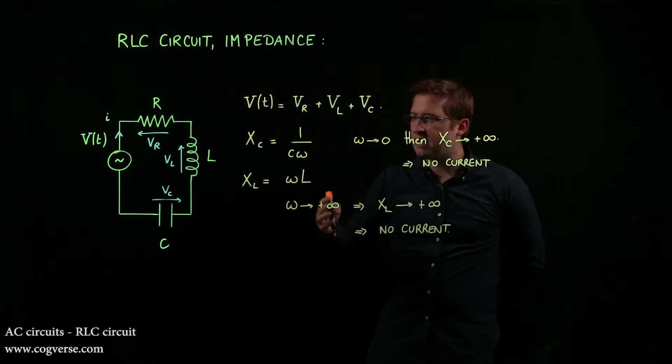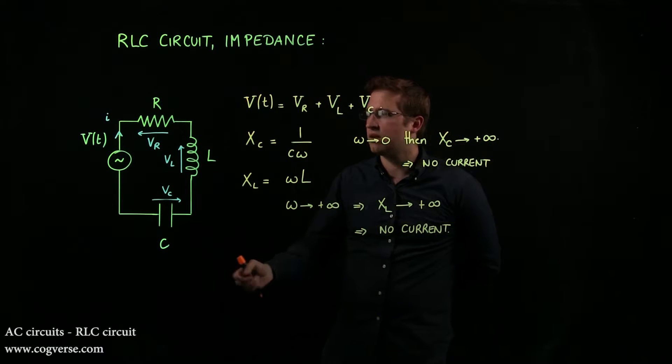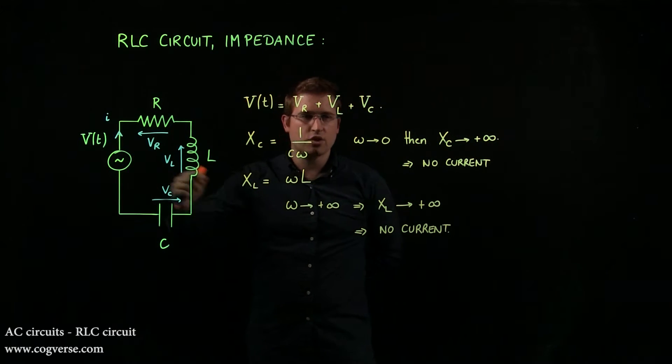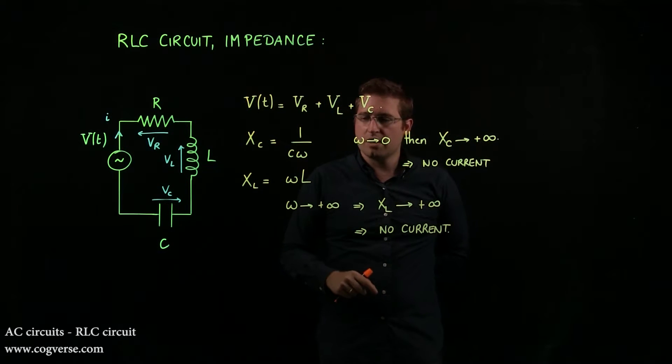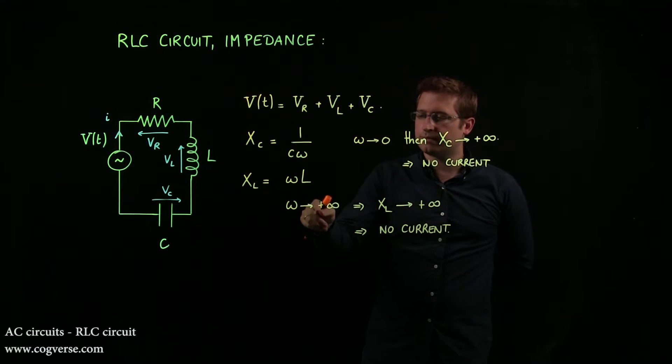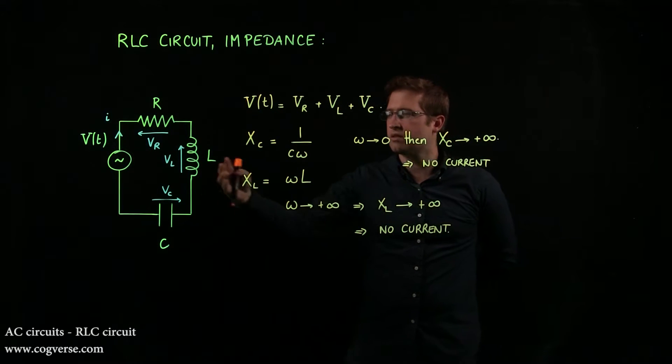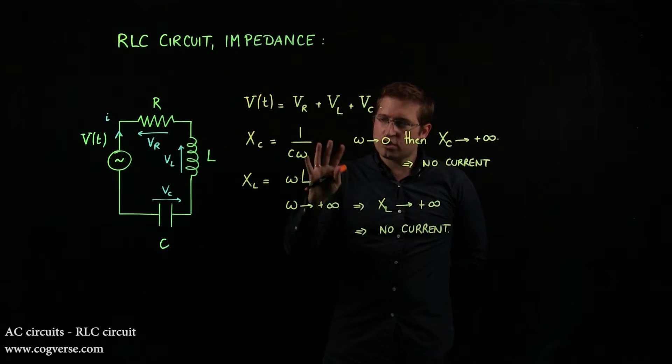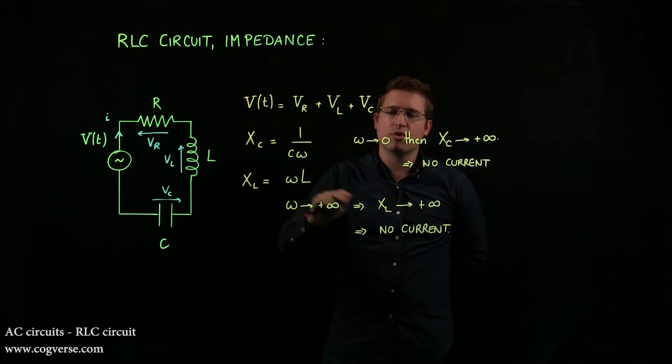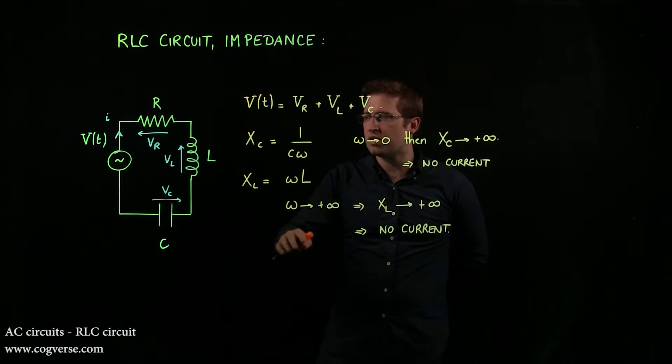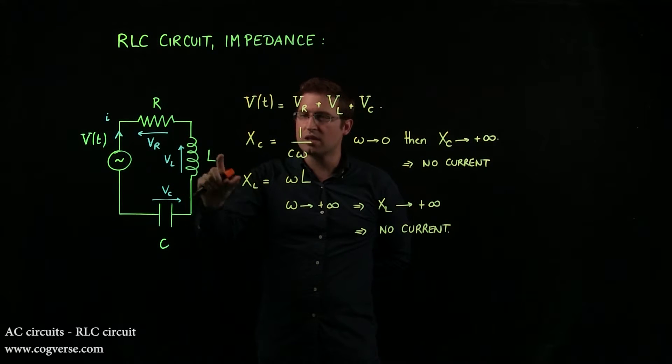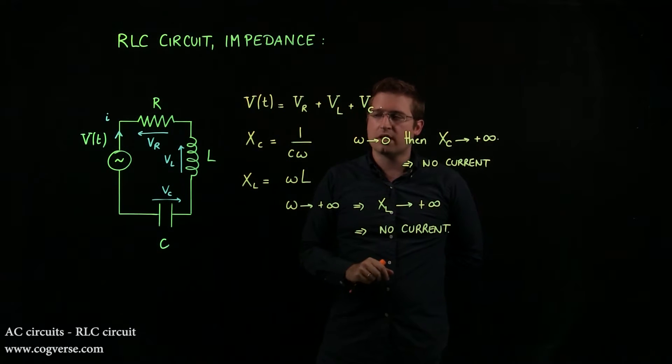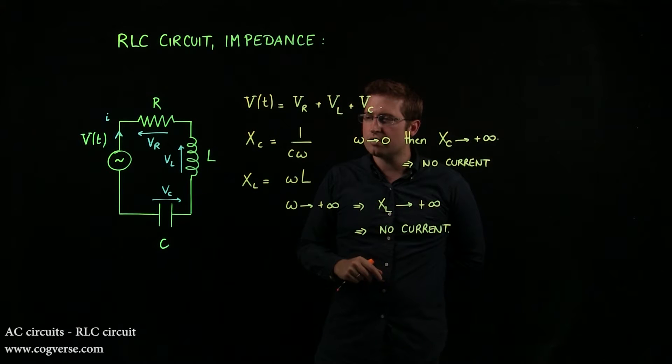So we can't just pick any angular frequency we want here on the AC generator. We have to pick a value that isn't too small, or isn't too big, otherwise there isn't much that's going to be happening in the circuit. So that's just to be remembered later on, because it means that there's going to be an interval of omegas that are going to work well, and then other values that don't.